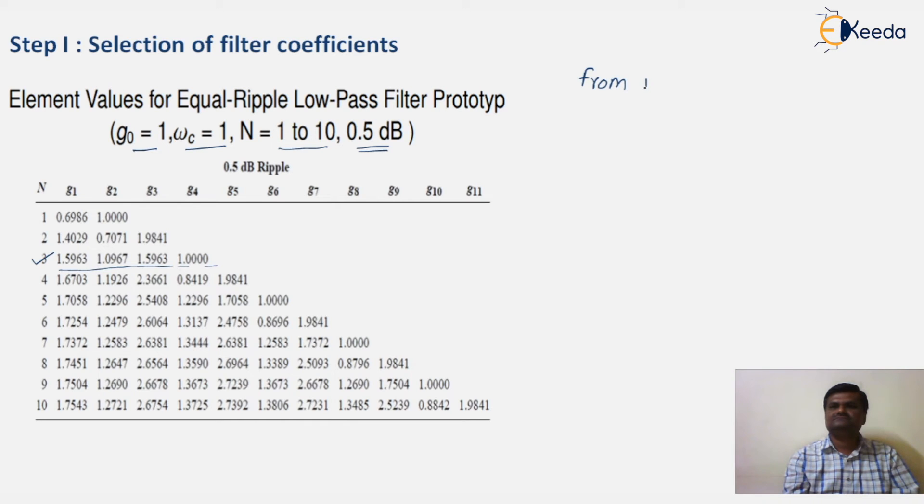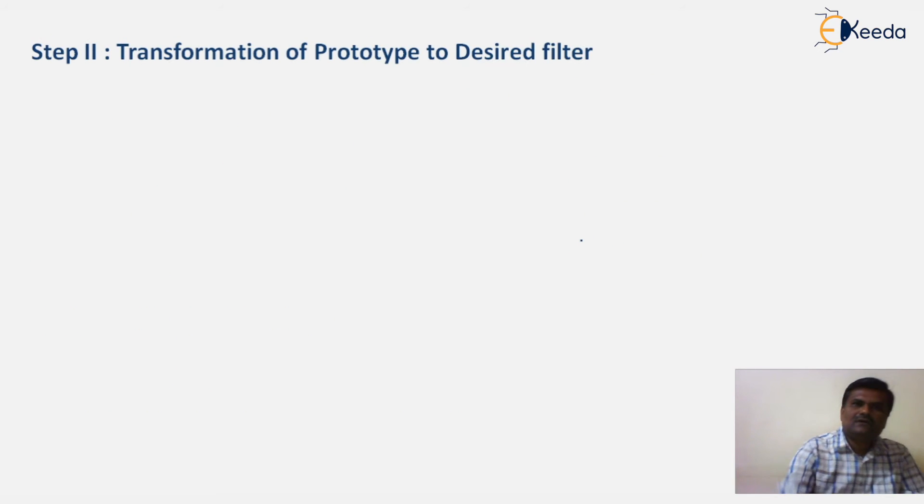This is N equal to 3, and these are the coefficients of the filter. Write from the table, so we have G0 equal to 1. If you see carefully, G1 and G2 both are same values.